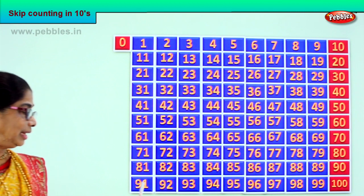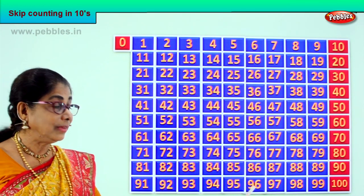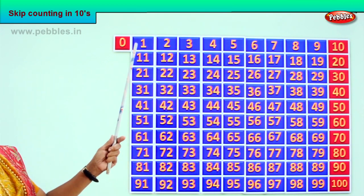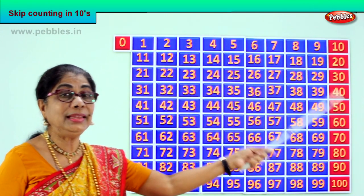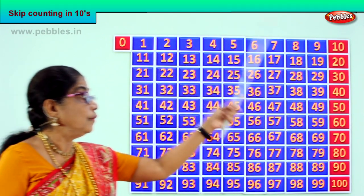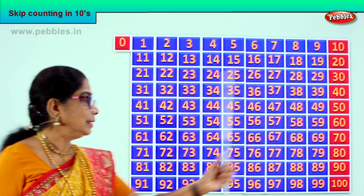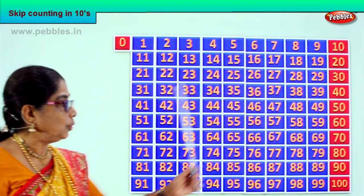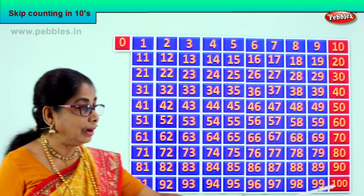After 90: 91, 92, 93, 94, 95, 96, 97, 98, 99, 100. From 1 to 10, 11 to 20, 21 to 30, 31 to 40, 41 to 50, 51 to 60, 61 to 70, 71 to 80, 81 to 90, 91 to 100.